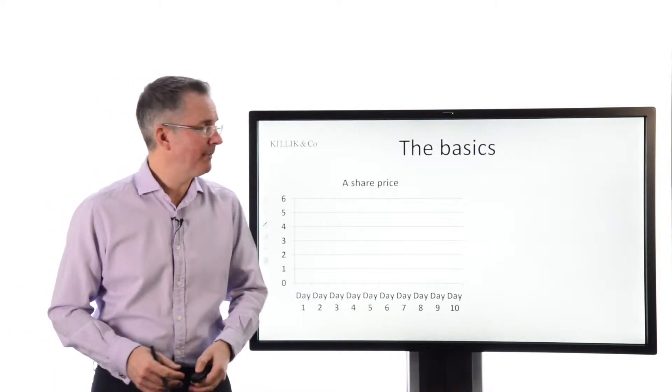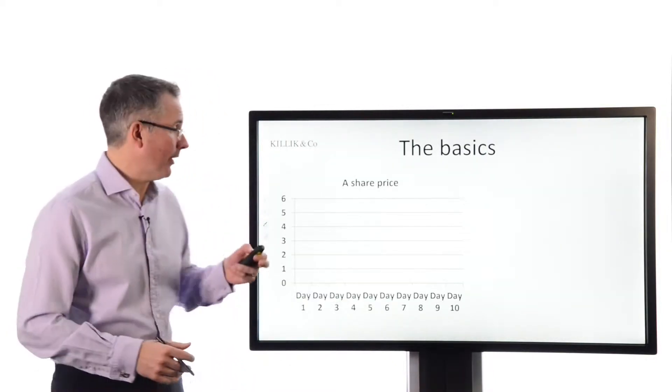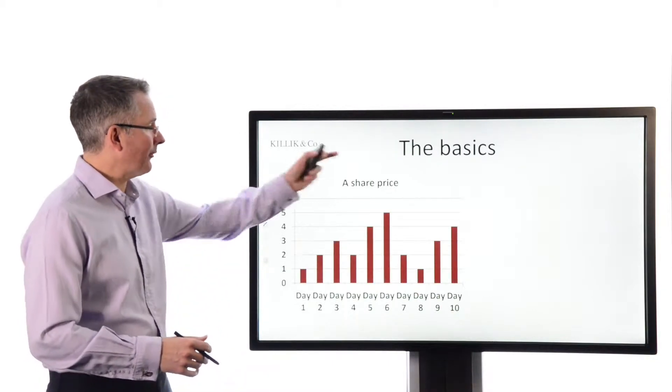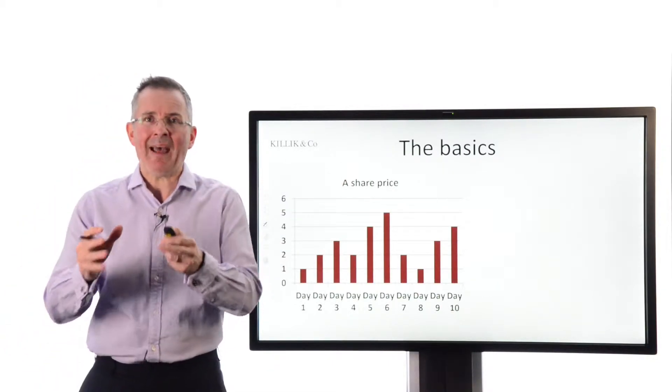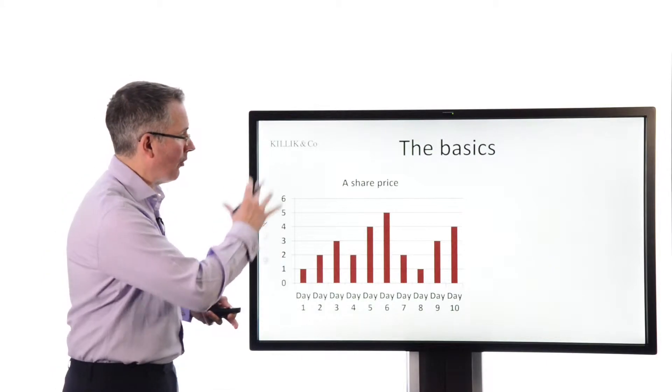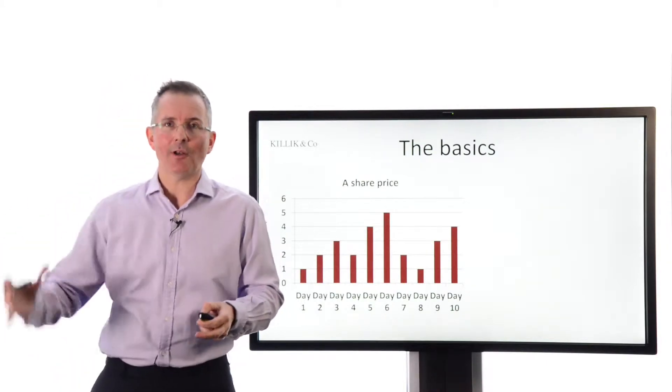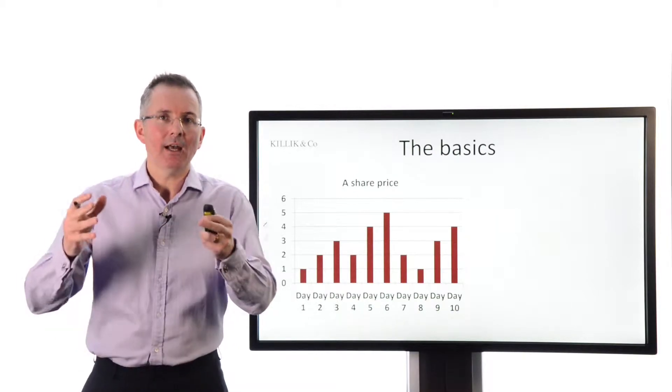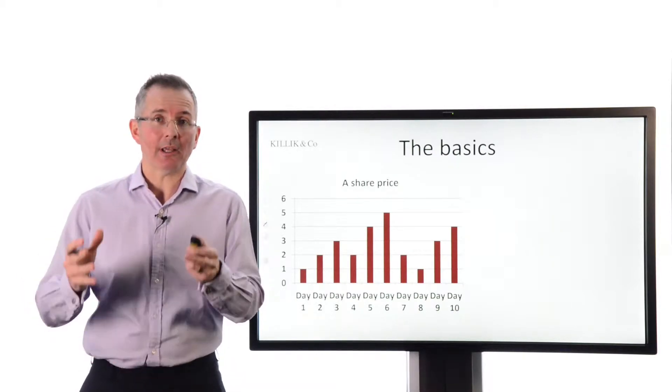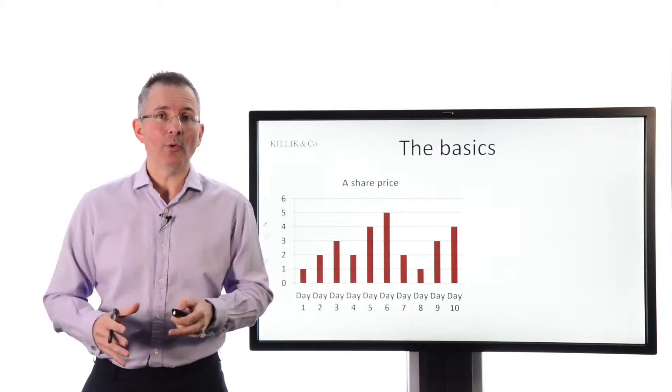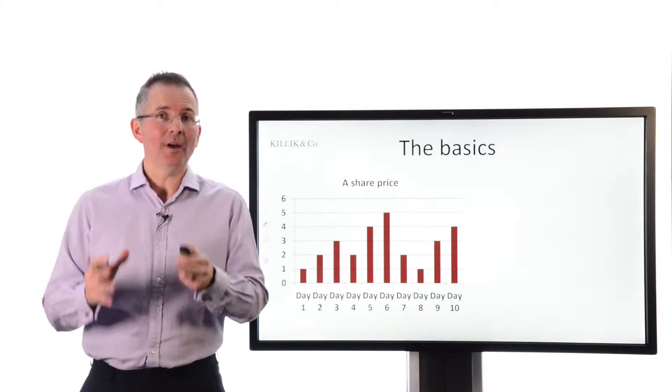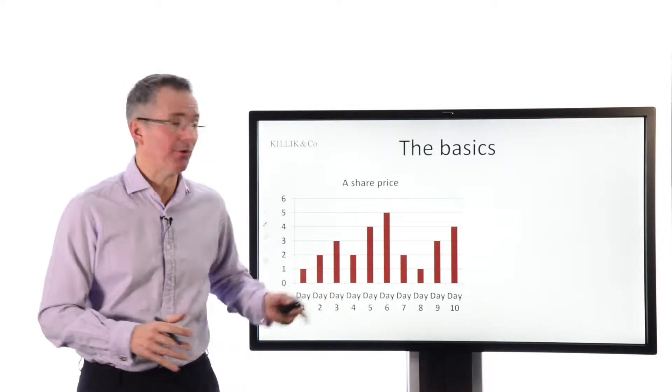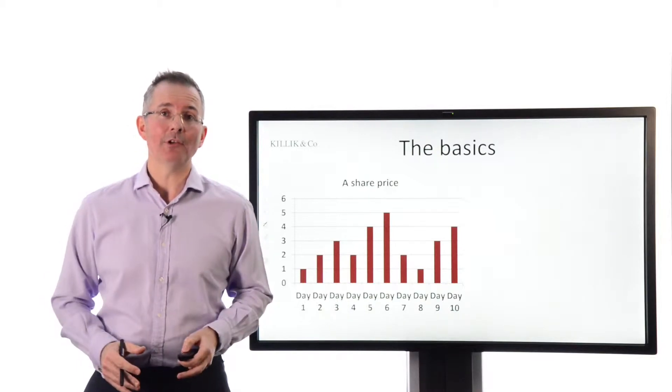Now the basics. Here are 10 days worth of stock prices all over the place. Quite hard to discern a pattern from that lot. You've got some strong days, some less strong days and quite a volatile pattern. So can we actually get the underlying picture out using something like a moving average? Well, it's possible.